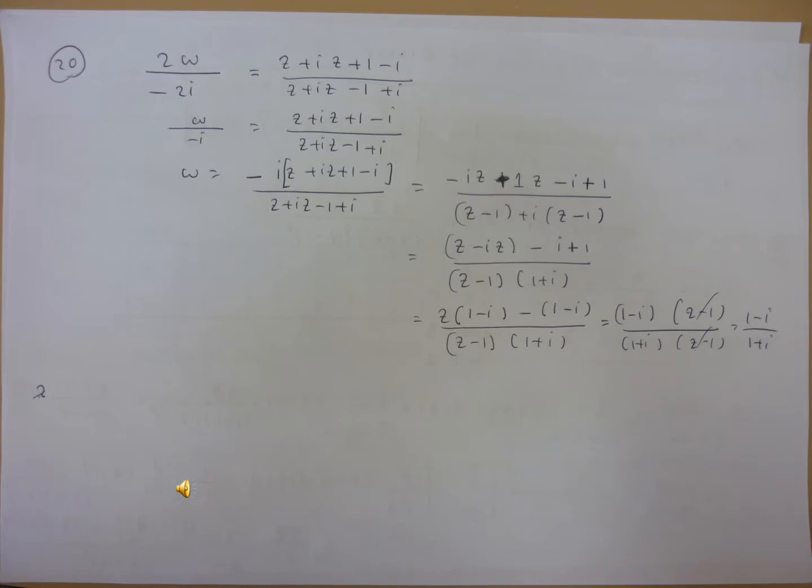So the final result is z multiplied by 1 minus i minus 1 minus i, divided by z minus 1 multiplied by 1 plus i. The numerator is 1 minus i multiplied by z minus 1, and the denominator is 1 plus i multiplied by z minus 1. So z minus 1 cancels out. Finally, you get 1 minus i divided by 1 plus i.